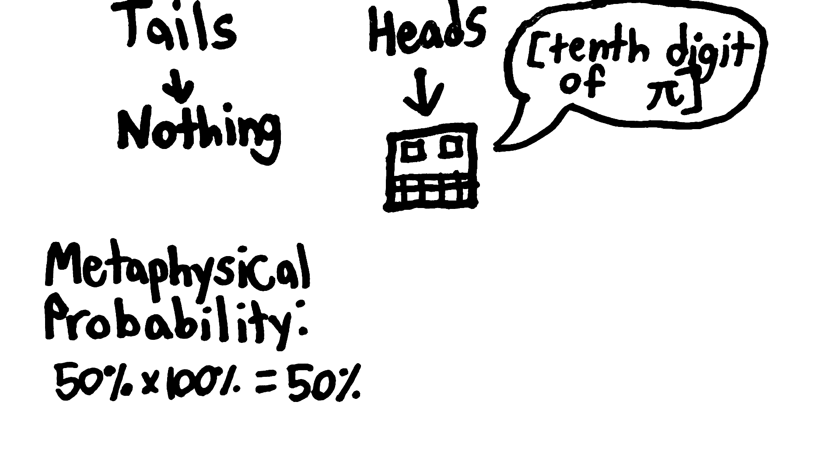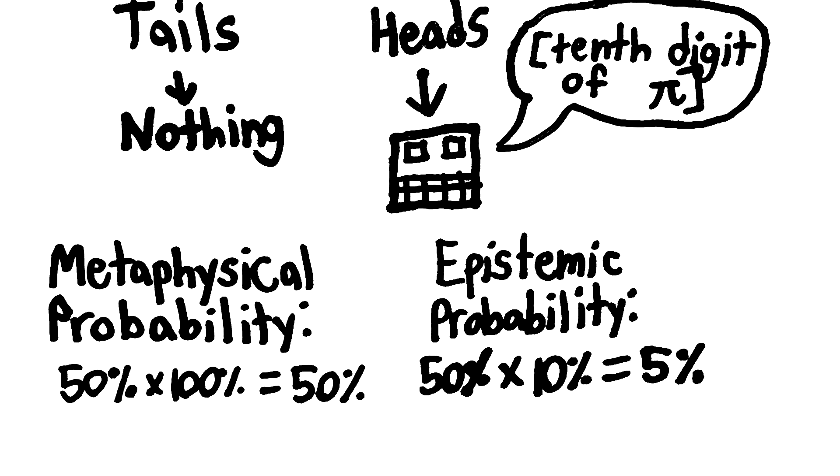Let's assume that you don't know that digit of pi, though. In that case, there's a 50% chance that the coin will land on heads, multiplied by the 1 in 10 chance that the tenth digit of pi is 3, which equals an epistemic probability of 5%.